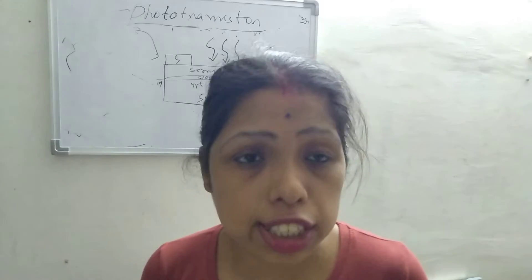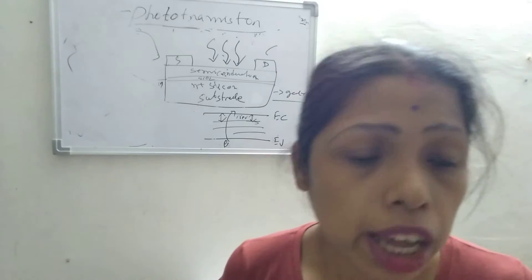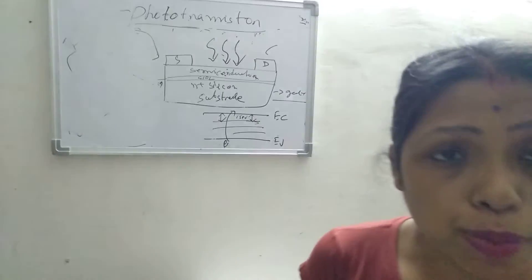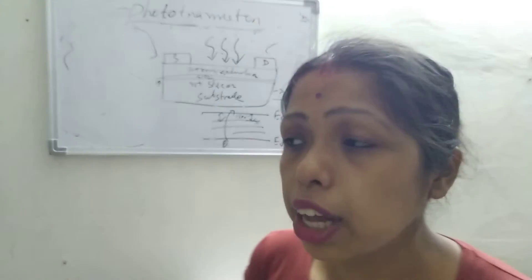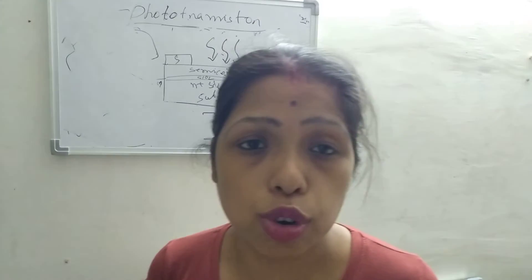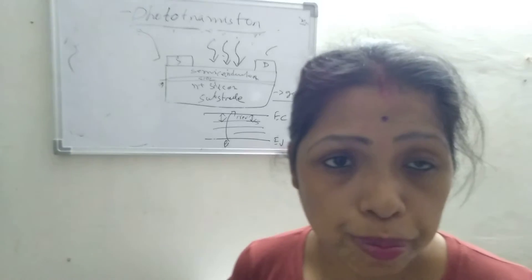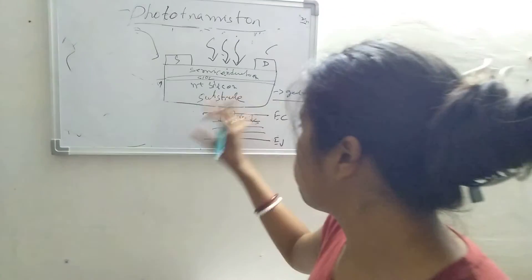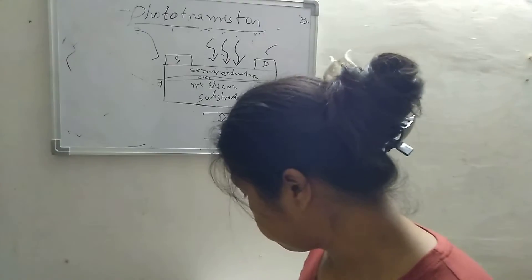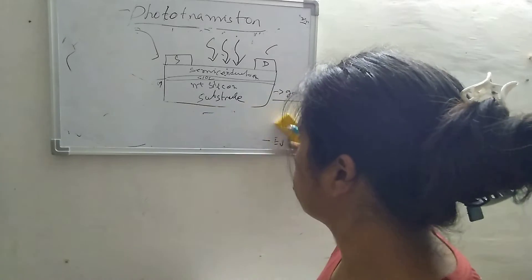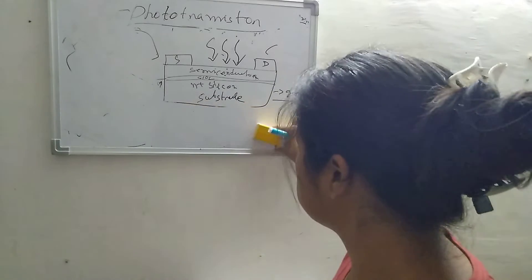Suppose in this case you will get 60% efficiency. In the previous case, if the same wavelength light is incident, then you will get higher efficiency — more than 90% efficiency. So this is about the photon generation of the phototransistor.